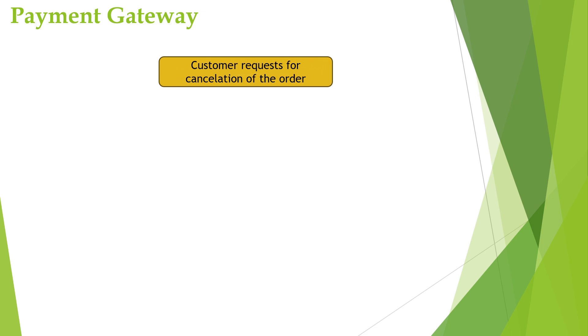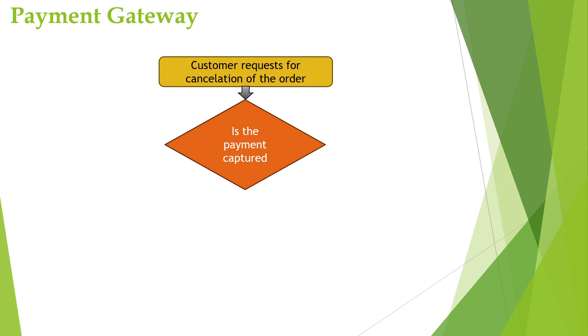Next, we will see how the transaction flow works when a customer wants to cancel an order or return a product and get a refund. The customer requests a cancellation or return. If payment had been made online and the funds were captured, the refund amount will be processed shortly.